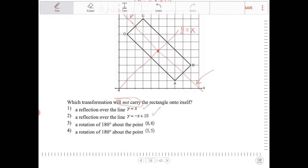A rotation of 180 degrees about point six comma six. So this point right here is the point of rotational symmetry. And this is two, four, five. So it should be five, five. So this is the one that works. Six comma six is the one that doesn't work. So it's option three.